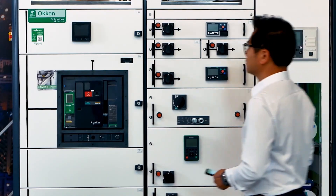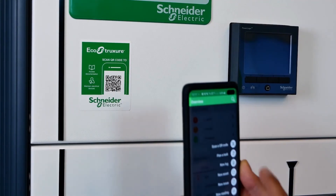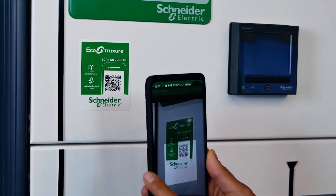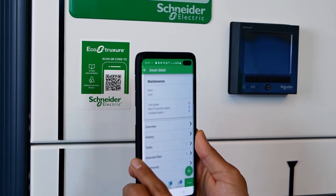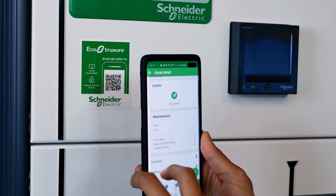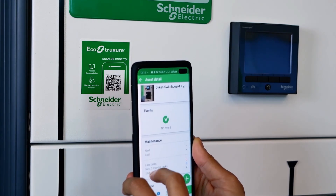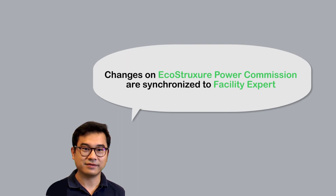I hope you now have a better understanding of how the export function works in different scenarios. Another important tip: EcoStruxure Power Commission and Facility Expert are connected through a secure cloud repository. Any changes in EcoStruxure Power Commission can be automatically synchronized to Facility Expert.